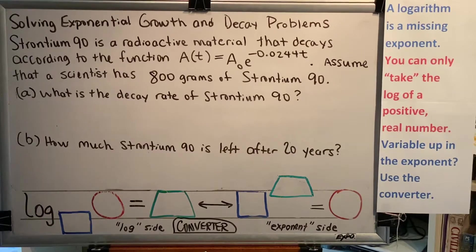Strontium-90 is a radioactive material that decays according to the function A(t) = A₀e^(-0.0244t). Assume that a scientist has 800 grams of Strontium-90.